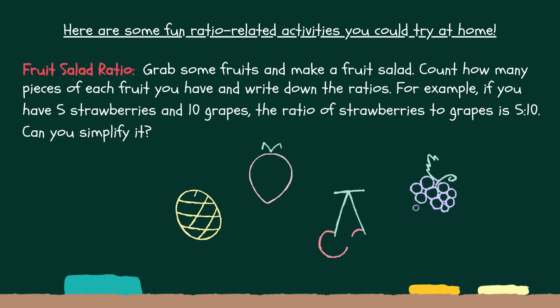Here are some fun ratio activities you can do either at home or school. Fruit salad ratio: Grab some fruits and make a fruit salad. Count how many pieces of each fruit you have and write down the ratios. For example, if you have five strawberries and ten grapes, the ratio of strawberries to grapes is 5:10. Can you simplify it?